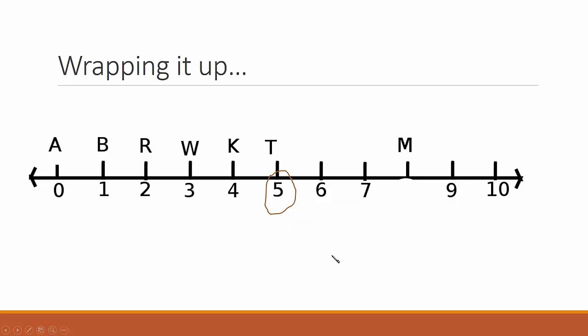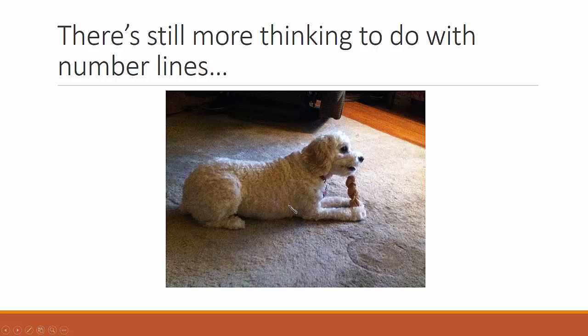So wrapping it up, number lines have coordinates like the 5. Our unit distance has to be the same, and we can label coordinates with letters, so the M would correspond to 8. There's still a little more thinking to do with number lines. We'll get there.